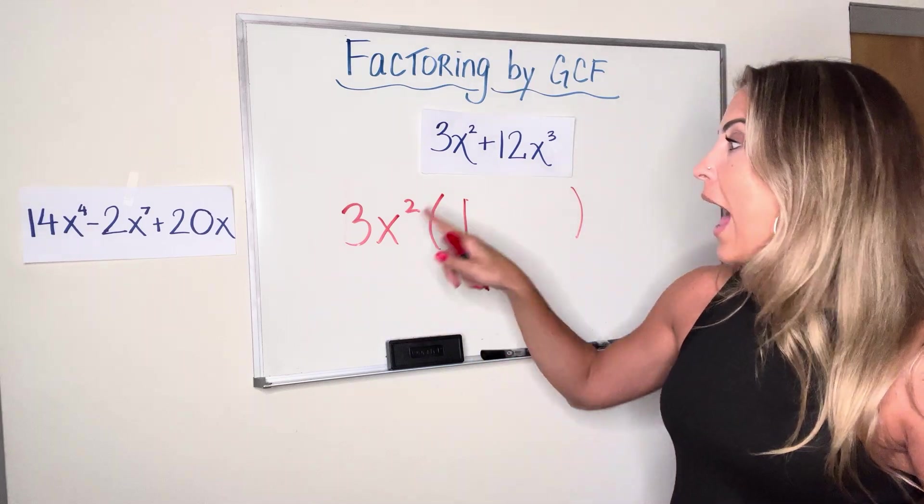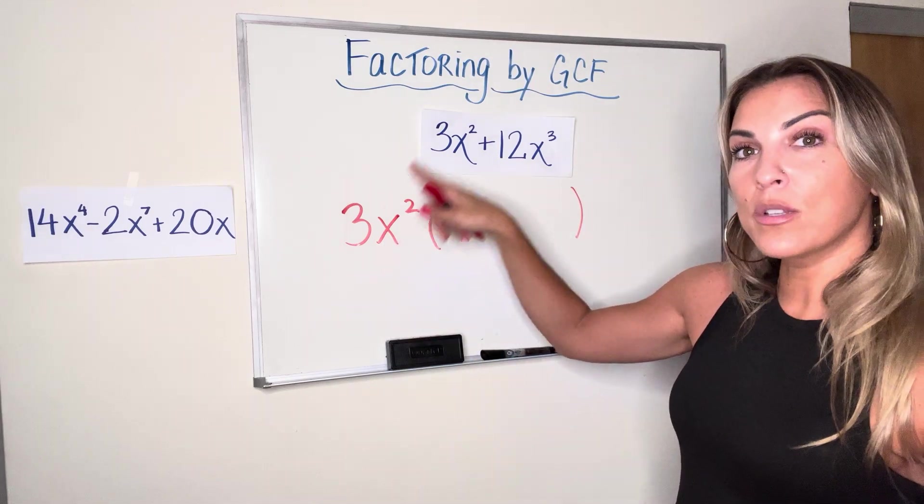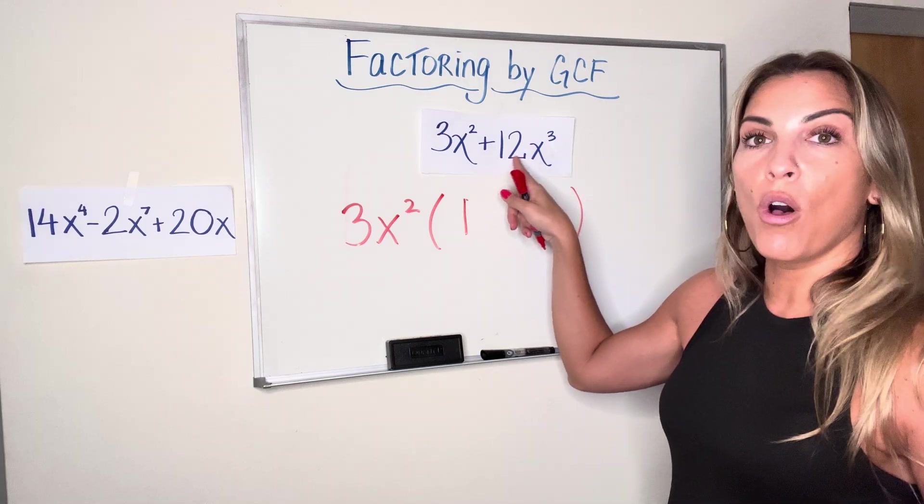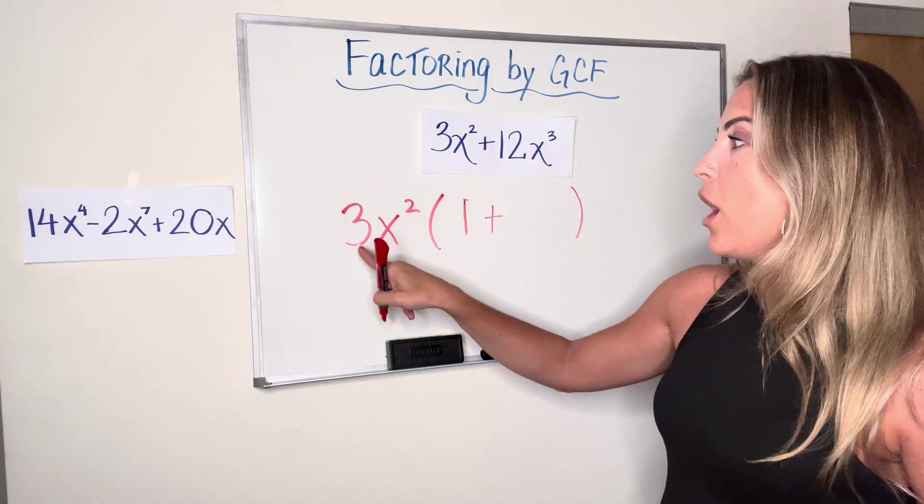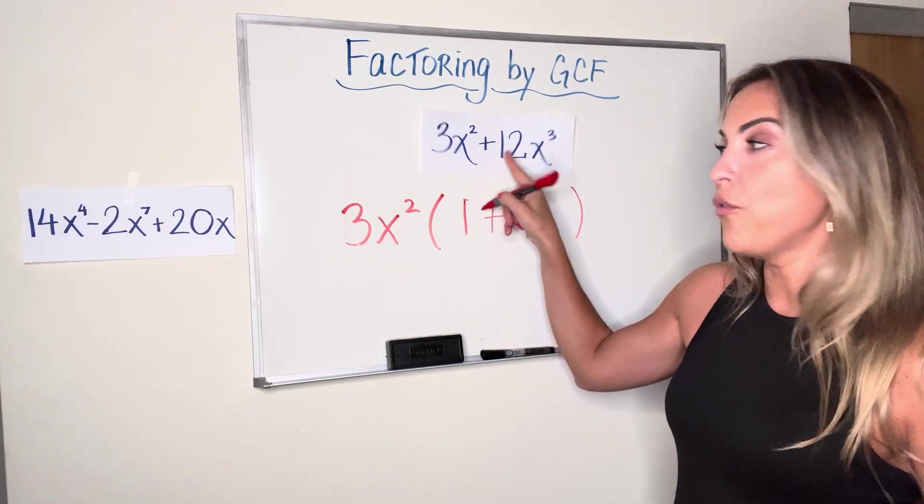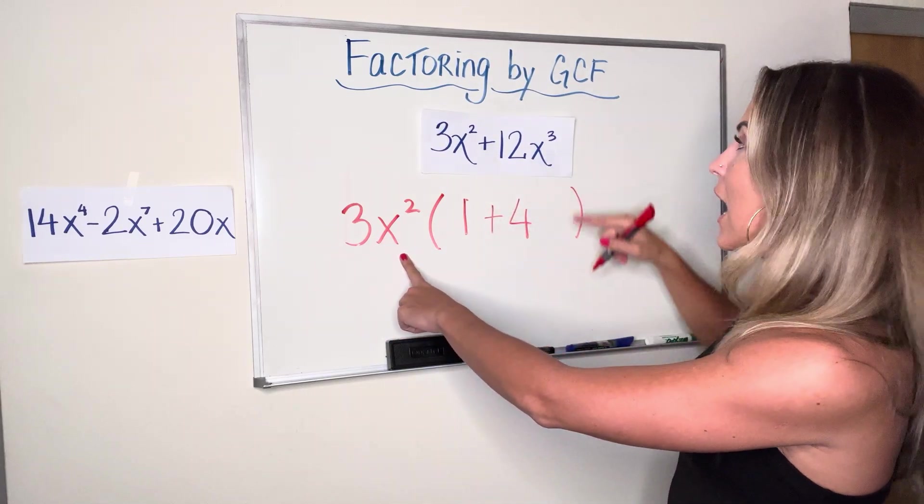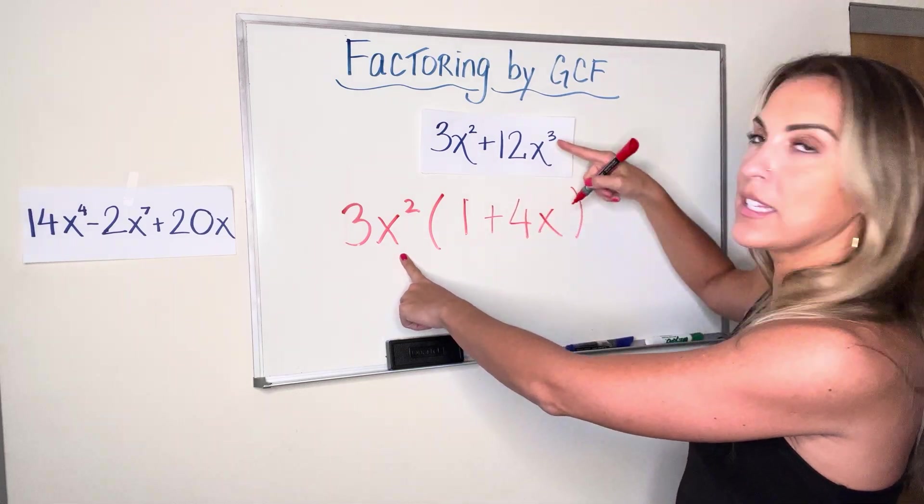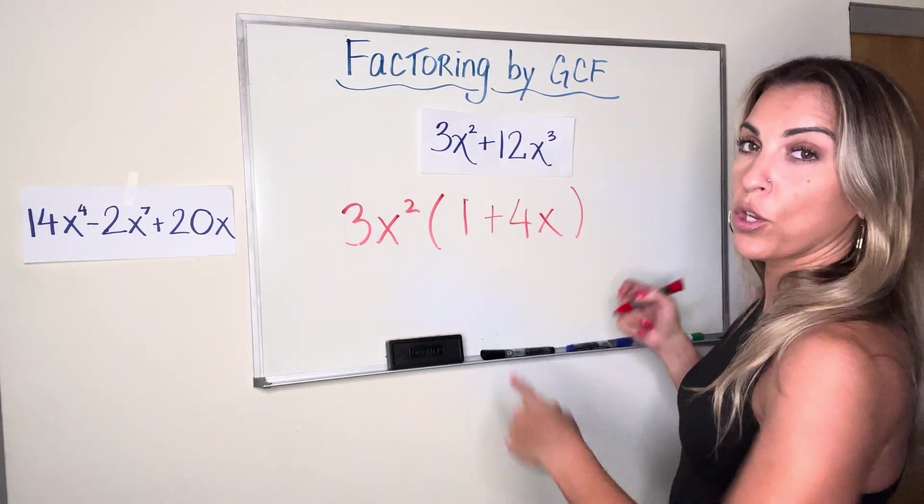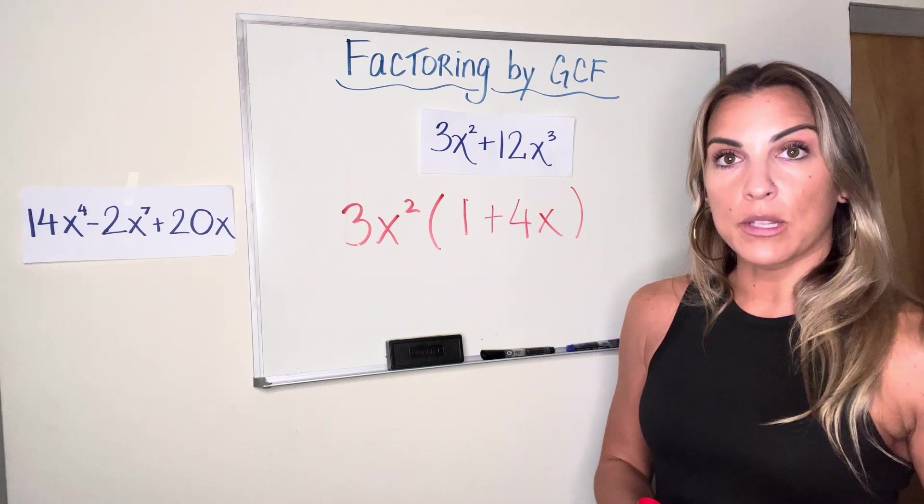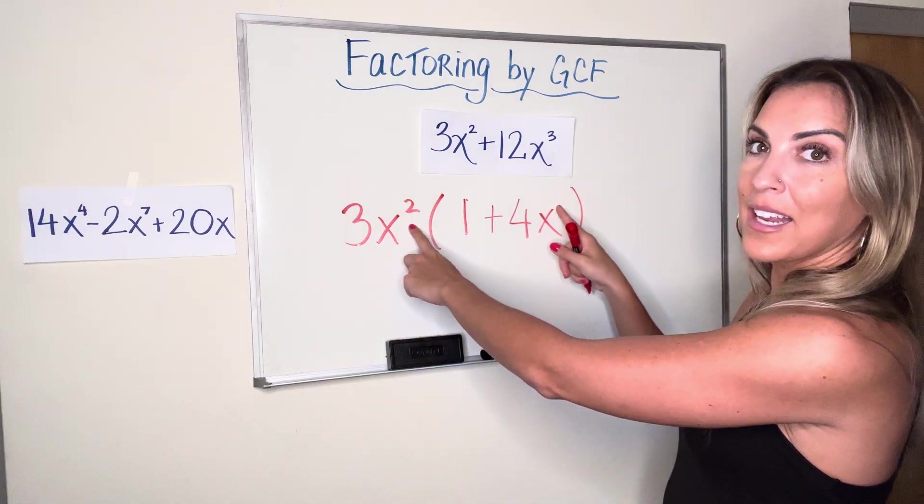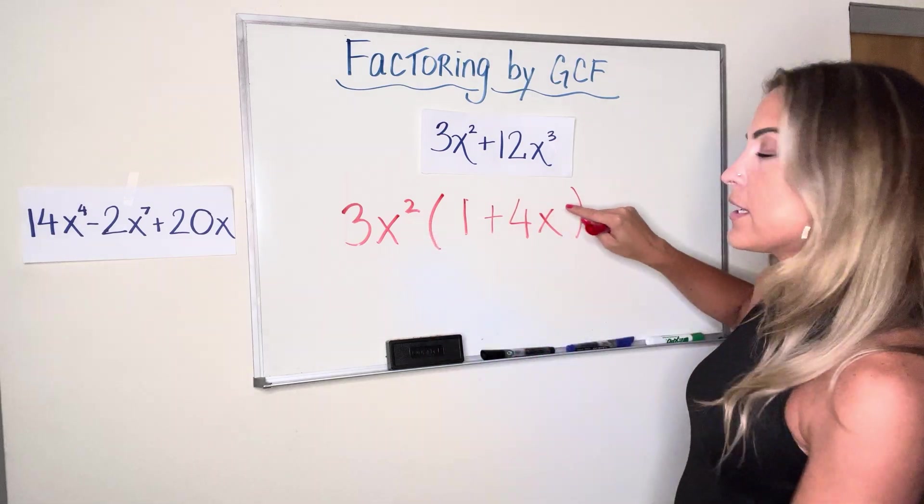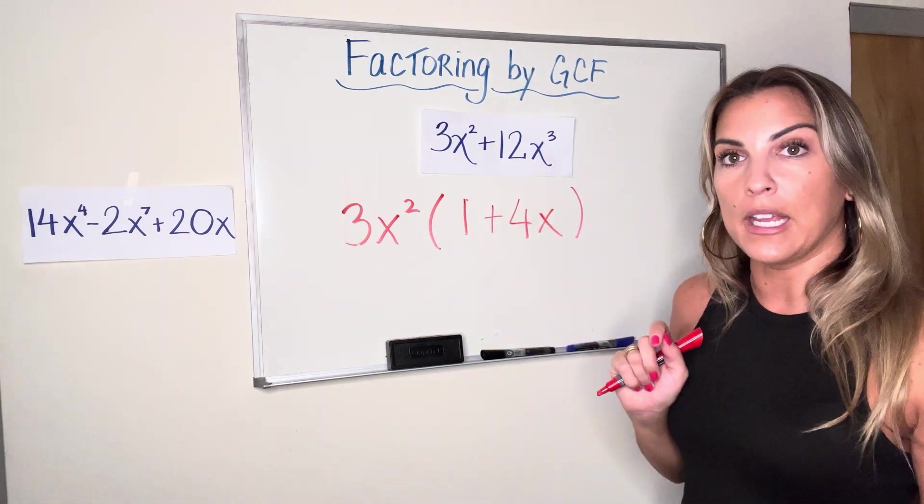The next term I have 3x². I need to multiply it by something that's going to get me to 12x³. So it's going to be positive because it's a positive 12. 3 times 4 is going to get me to the 12 and x² times x is going to get me to x³. If you remember your rules for multiplying with the same base, when we multiply powers with the same base, we're actually adding the exponent. So 2 plus invisible 1 over here will get me to the x³ that I need.